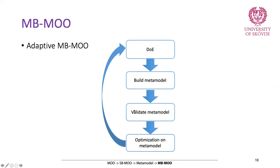When you have a validated metamodel, which is a mathematical function, you can use this mathematical function in your optimization. That means instead of running finite element simulations to find the objective value for each solution in the population, you input the variables into your mathematical function and get the value very fast.